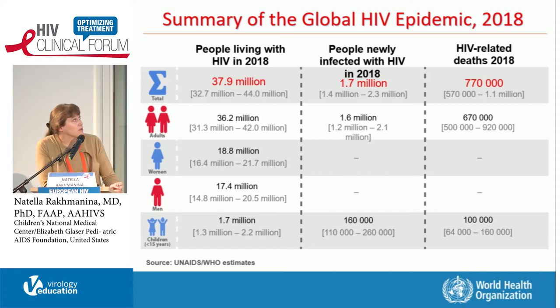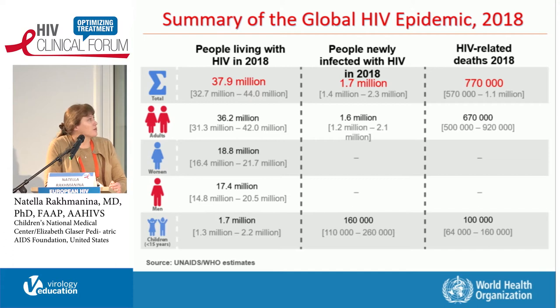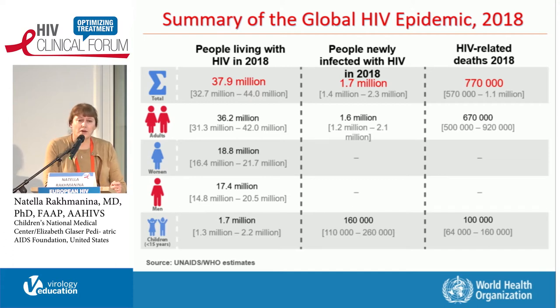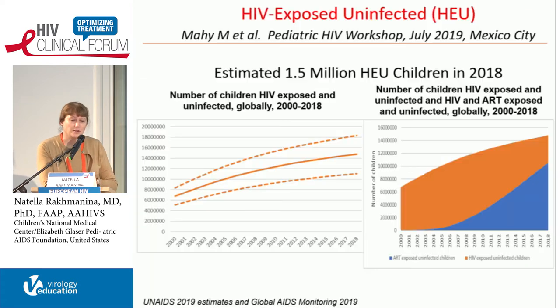We keep seeing about 560,000 new cases in adolescents each year. I also want you to look at one number here — women — and point out that a lot of women in the world are living with HIV, and the majority of them are of childbearing age. So all of it is relevant to HIV in pediatrics and adolescents.